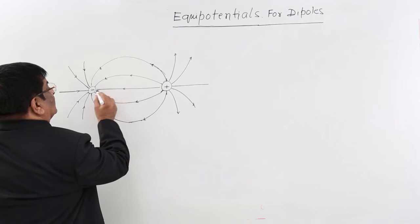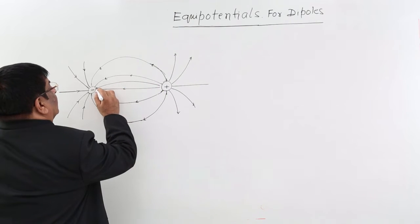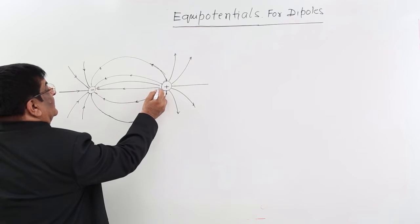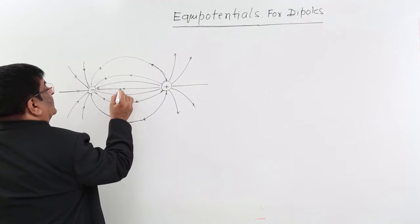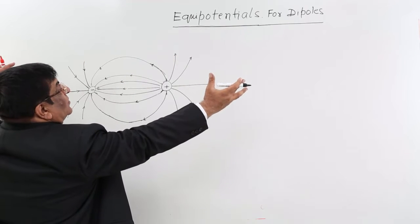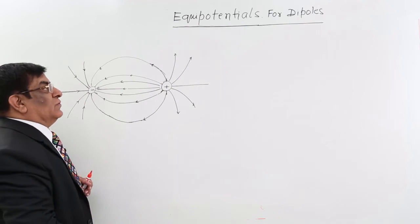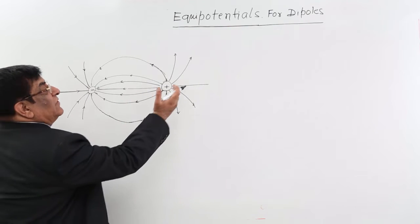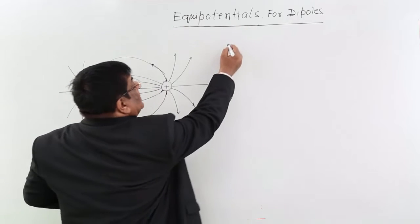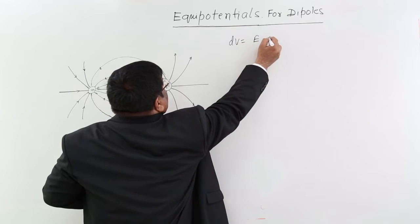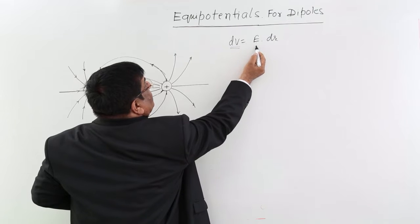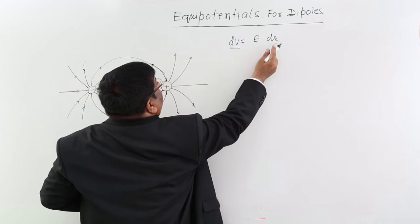Here the concentration is more. Why is the concentration more? Because from plus to minus this is a nearby place, so here the electric field will also be very strong. As we go away, the electric field becomes less and less, so equipotentials will have more and more distance, because we know dV is equal to E·dr. If we take equal dV and the electric field becomes weak, then dr has to become large.